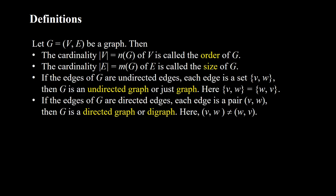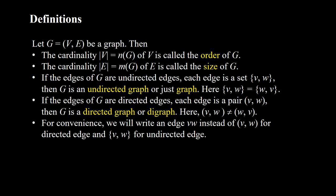An undirected edge is represented by a set, and a directed edge is represented by a pair. But for convenience, we will write an edge V, W instead of the pair (V, W) for a directed edge, and the set {V, W} for an undirected edge.